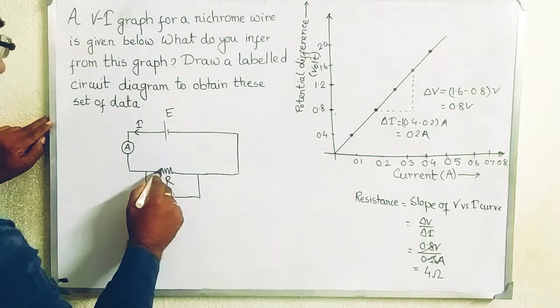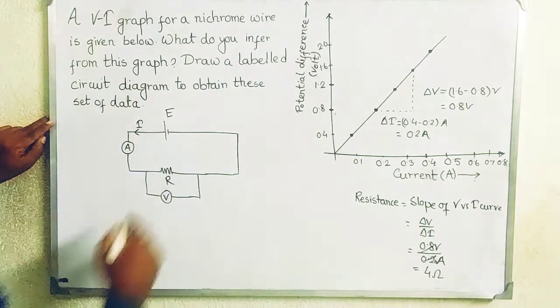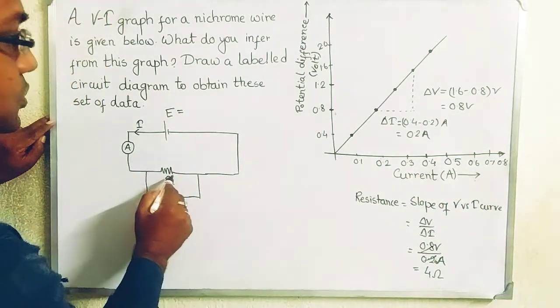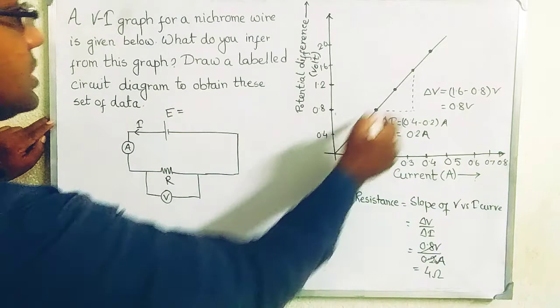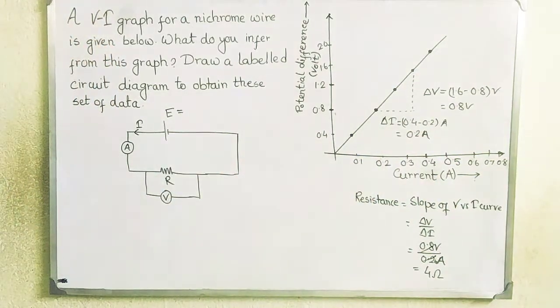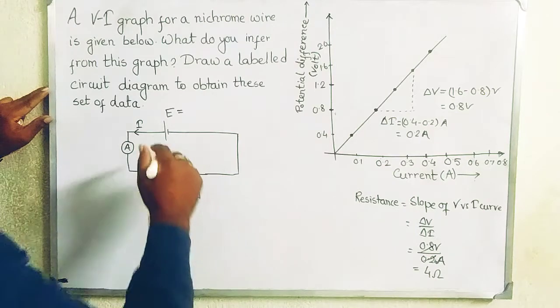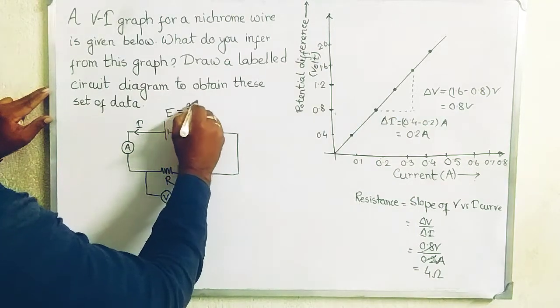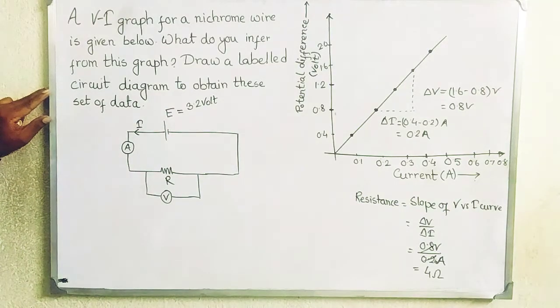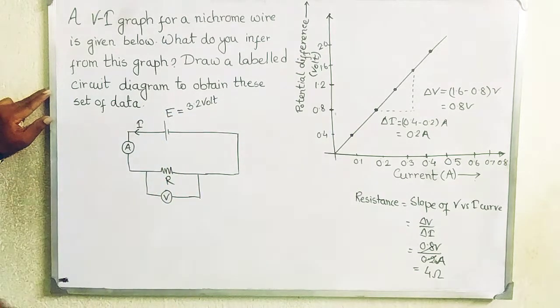Here the resistance is 4 ohm. You are basically applying this. If there is one electric cell, what is the ammeter value? The current maximum can pass through it is 0.8. The data are not taken up to 0.5 ampere, but it can be extended up to 0.8. From this idea, we can say 0.8 into 4, 3.2 volt may be the maximum voltage. It will be the EMF of the electric cell.